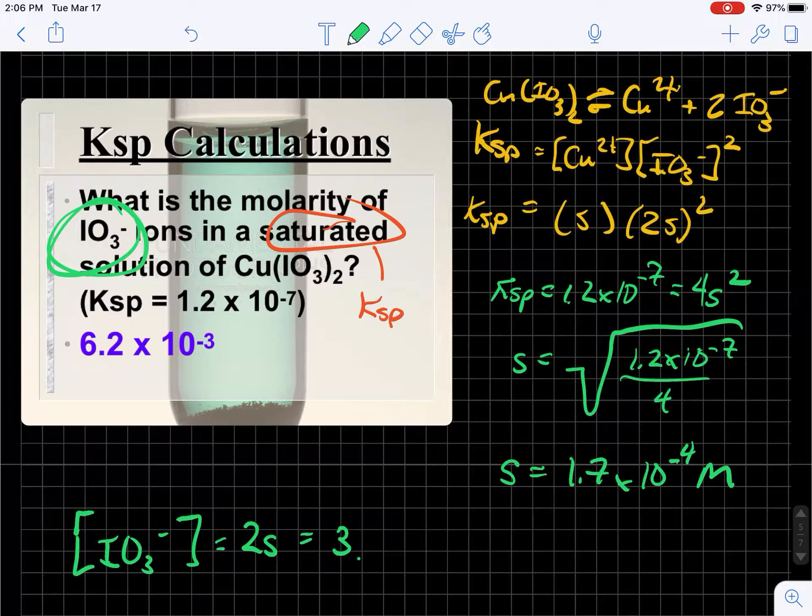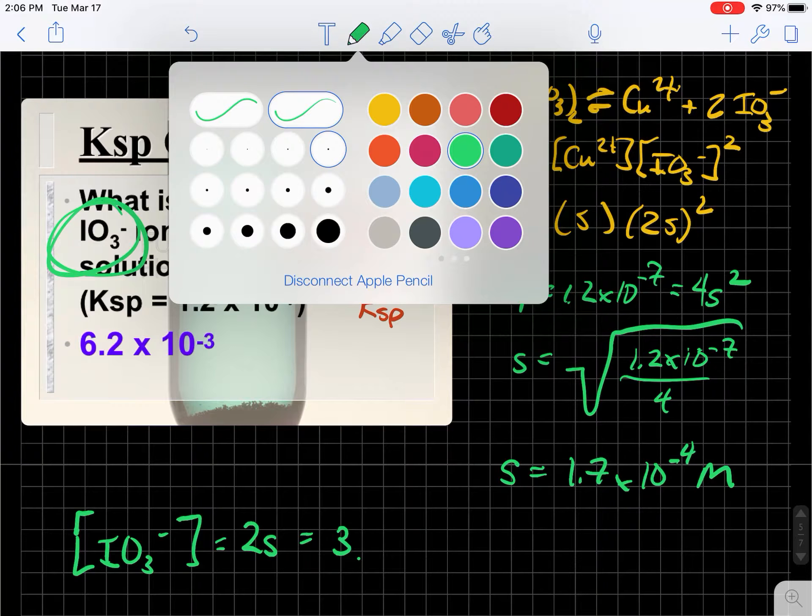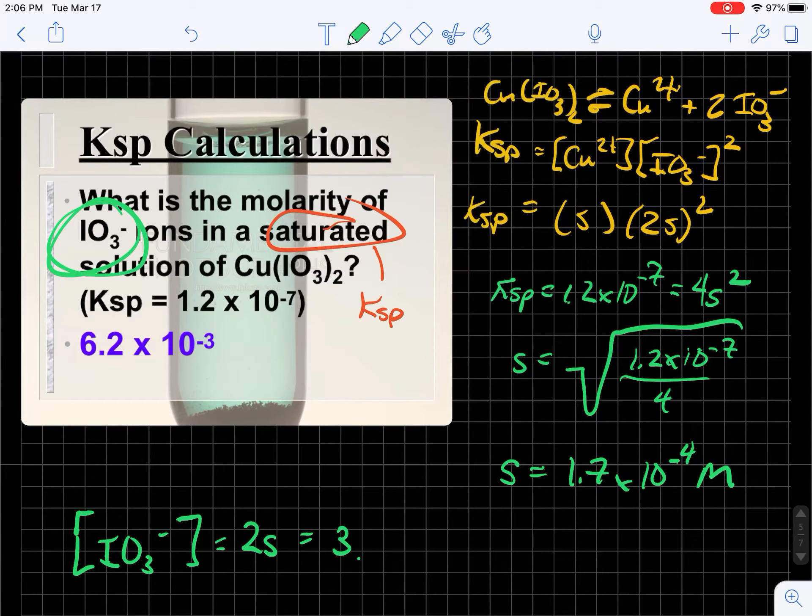Oh, okay, here's the problem. Algebra issues. Two s squared times s is not four s squared. It is four s cubed.